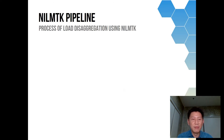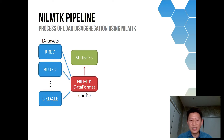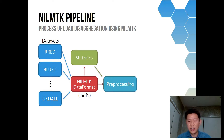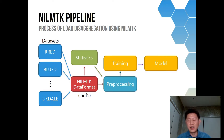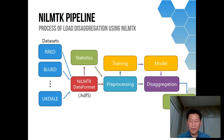The NILMTK pipeline works as follows: you have a dataset, you put it into data format, and then you can have a series of that data and start pre-processing and training a model. Then you can start disaggregation for appliance power usage and get the performance metrics of the algorithm.